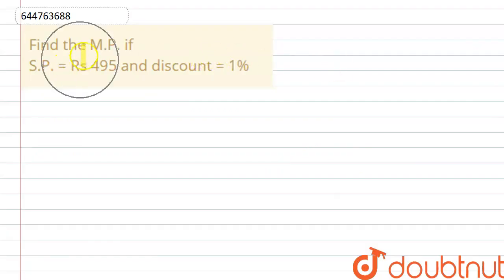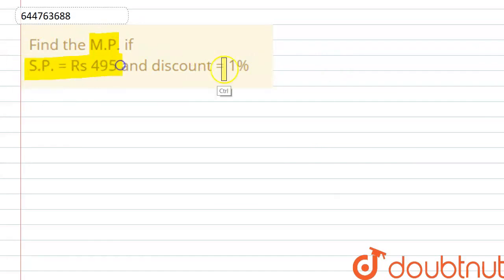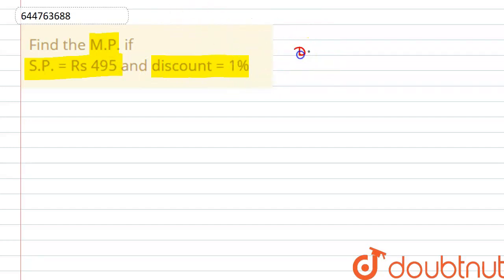Hello everyone. We have a question: find the mark price if selling price is Rs. 495 and discount is 1%. The formula here is: discount percent is equal to mark price minus selling price, divided by mark price, into 100.